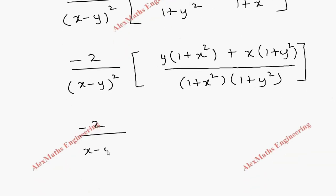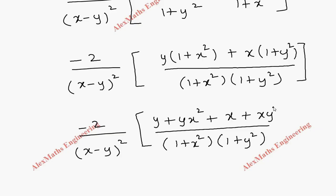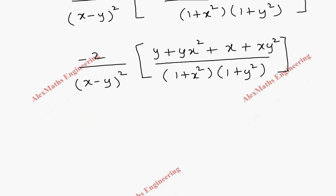So the expression is minus 2 by (x minus y)² in front, and the denominator of the bracket is (1 plus x²)(1 plus y²). Expanding the numerator: y plus yx² plus x plus xy², and grouping like terms gives x plus y plus xy(x plus y).